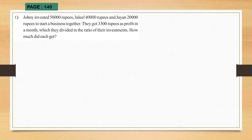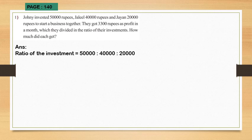Now let us do questions from page number 140. First question: Johnny invested 50,000 rupees, Jaleel 40,000 rupees and Jayan 20,000 rupees to start a business together. They got 3,300 rupees as profit in a month which they divided in the ratio of their investment. How much did each get? First of all, let us find the ratio of their investment. Ratio of their investment equal to 50,000 is to 40,000 is to 20,000. Here 10,000 is common, so each term is divided by 10,000. We get the ratio equal to 5 is to 4 is to 2.